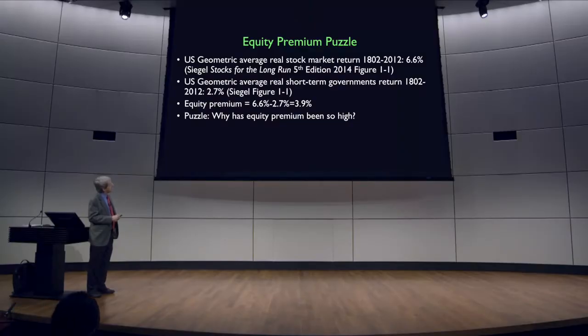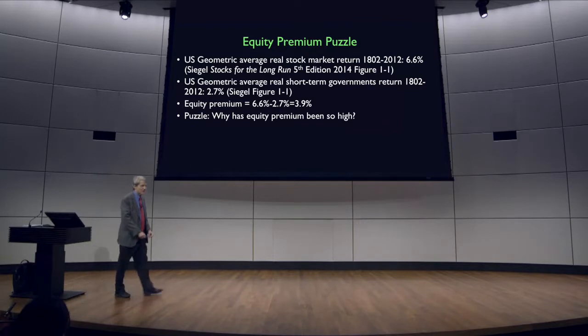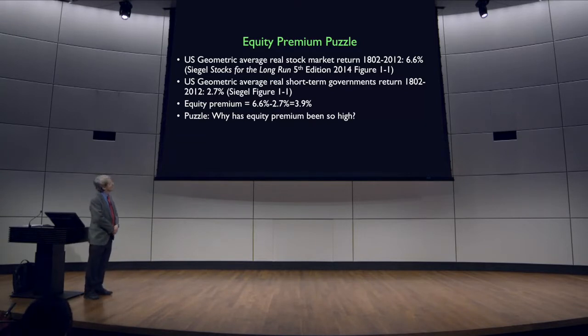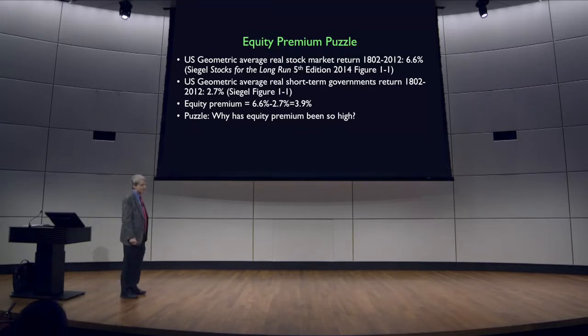If you look historically at different asset classes, you find they have paid different amounts out on average through time. Jeremy Siegel, an old friend of mine at the Wharton School, has just come out with the fifth edition of his book, Stocks for the Long Run. He calculates the average return on the stock market in the United States from 1802 to 2012 — that's 210 years of data. He finds that correcting for inflation, the real inflation-corrected return on average for those 200 years was 6.6% a year.